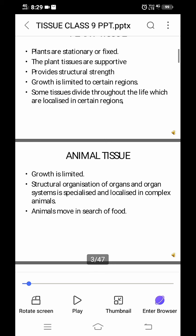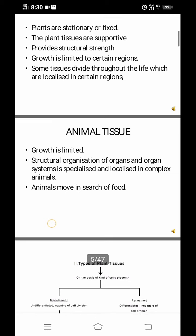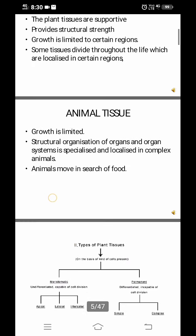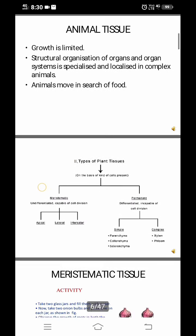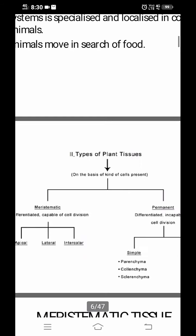The structural organization of organs and organ systems is specialized and localized in complex animals — like in our circulatory system, the heart, blood vessels and other organs together help to perform the different functions of the animal. So specialized organs are present for that. Animals move in search of food, whereas plants are stationary.